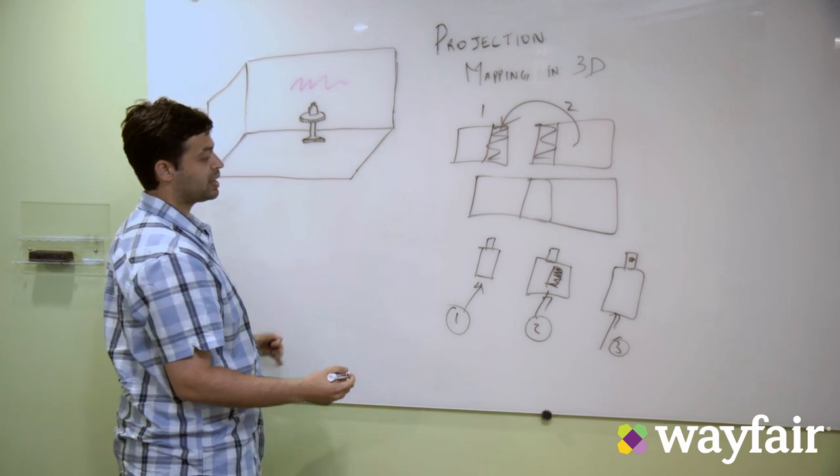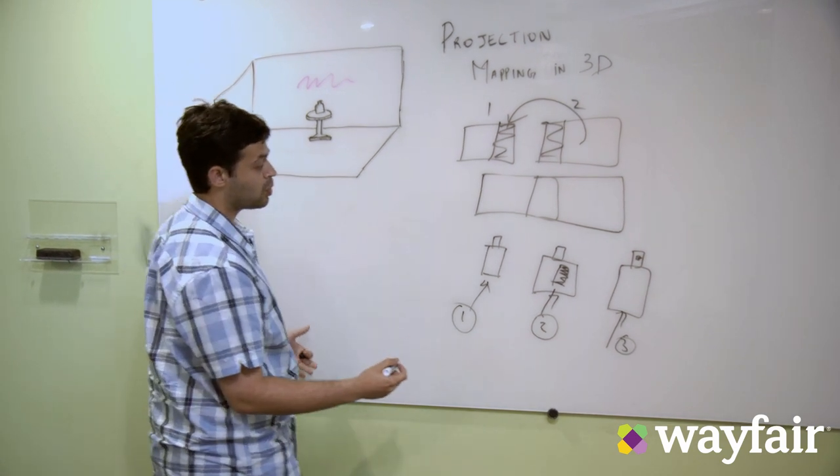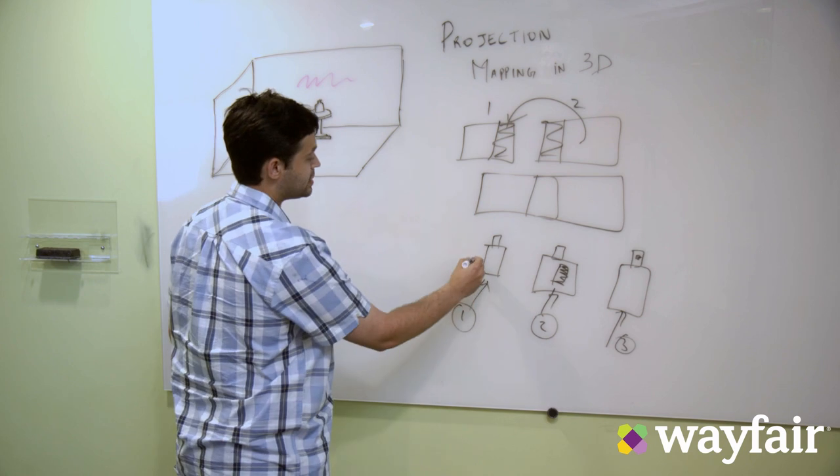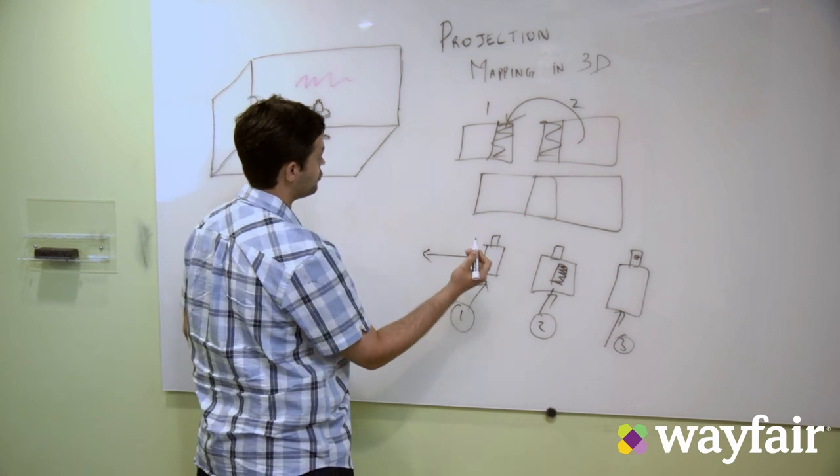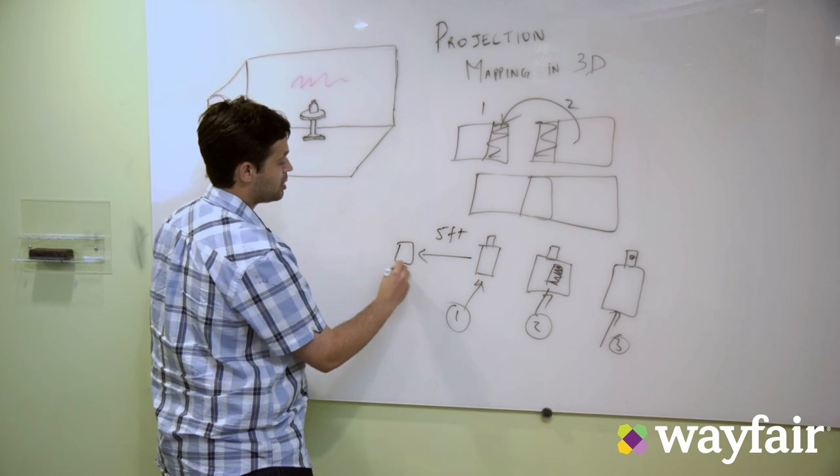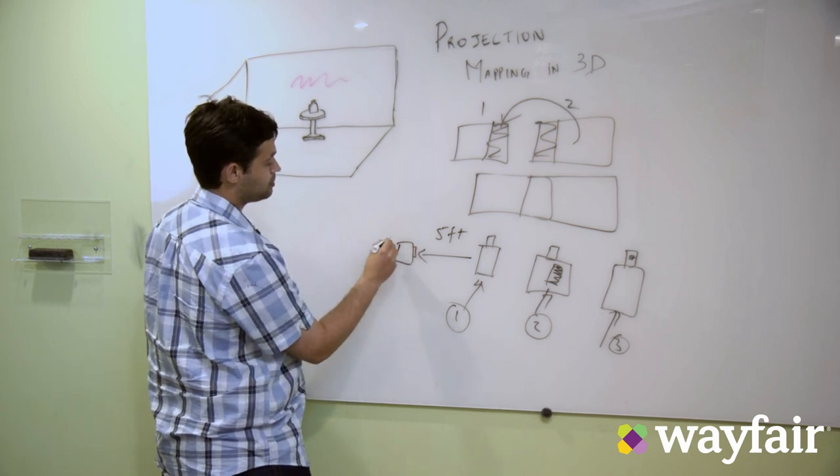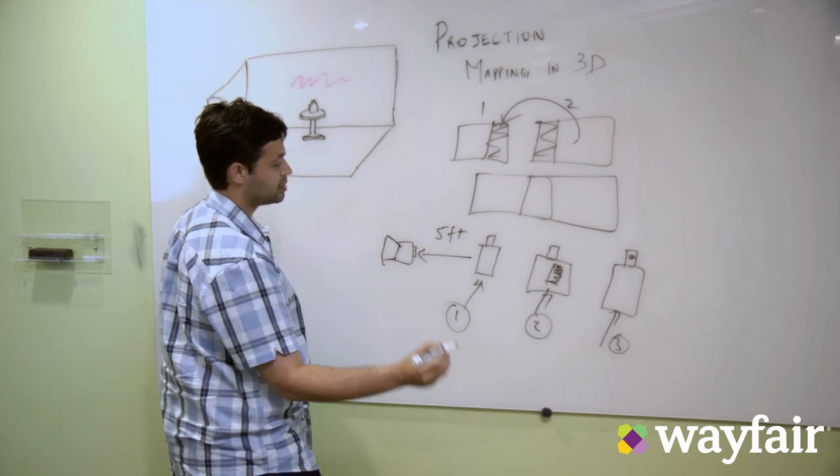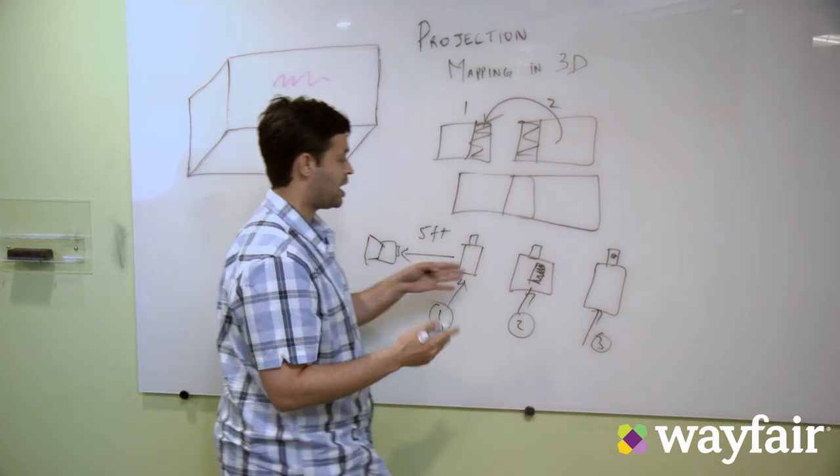For example, if I were to know that this bottle is at a distance of like 5 feet from the camera, so this is your camera. This image is at 6 feet.